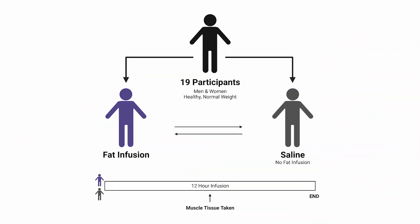The researchers recruited 19 healthy, normal-weight individuals that were somewhat active. Half had fat infused into their bloodstream for 12 hours, and the other half had saline — so no fat — infused for the same amount of time. Some weeks later, the groups switched places, so both groups experienced a blood fat infusion.